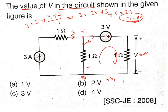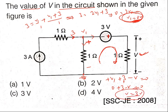Just take the right side of this element as plus V1, then plus 3, and then the right side of the next element gives minus V equals 0. Substituting V1 equals 0 volts: 0 plus 3 minus V equals 0, therefore V equals 3 volts. The answer is 3 volts.